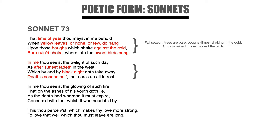Now let's look at the second stanza: In me thou seest the twilight of such day, as after sunset fadeth in the west, which by and by black night doth take away, death's second self that seals up all in rest. He starts this stanza with the words 'in me,' which tells me as a reader that he's making a personal connection to this poem. After the sunset fades comes night — he's referring to night time. He says black night takes away, and then finishes with: death's second self seals up all in rest. I can make the inference that he's saying death will affect everyone — it seals up all.